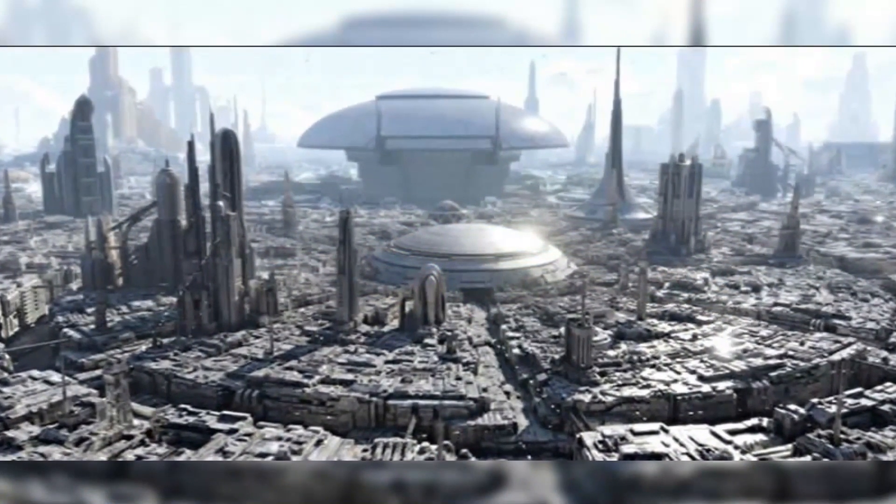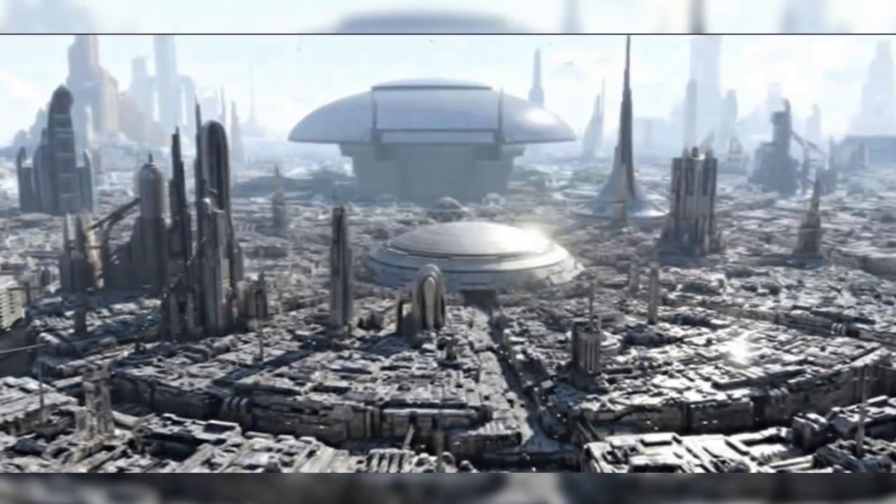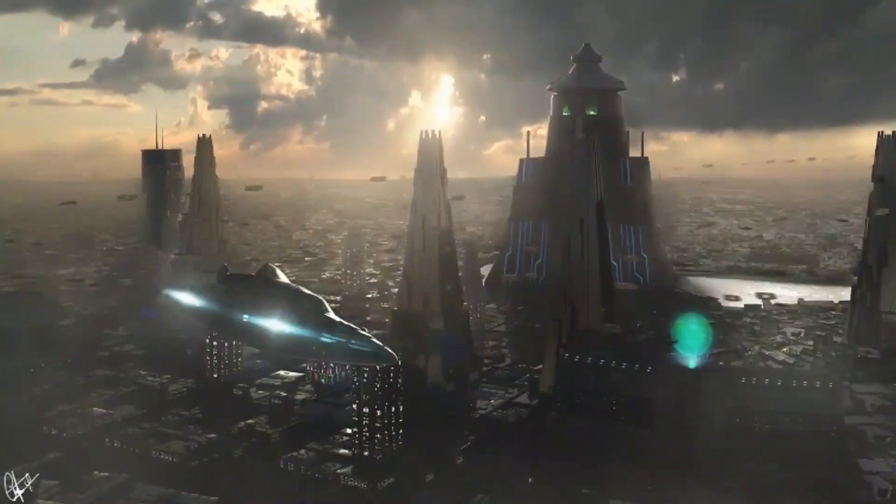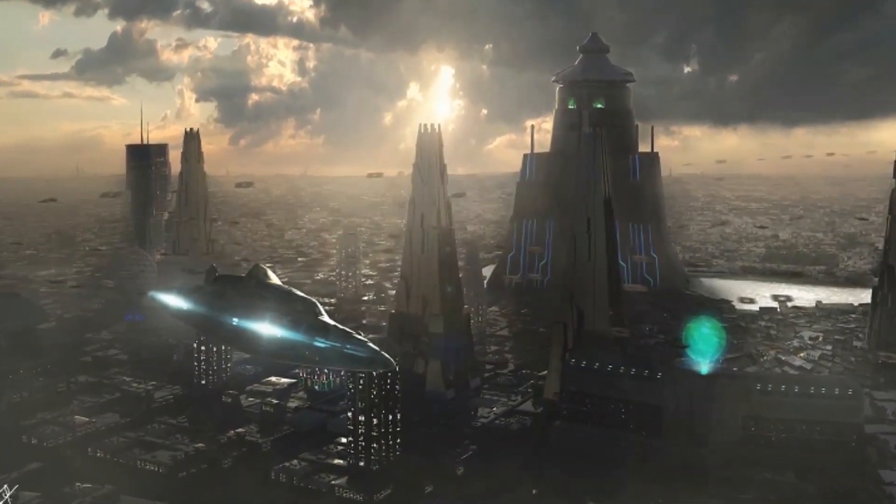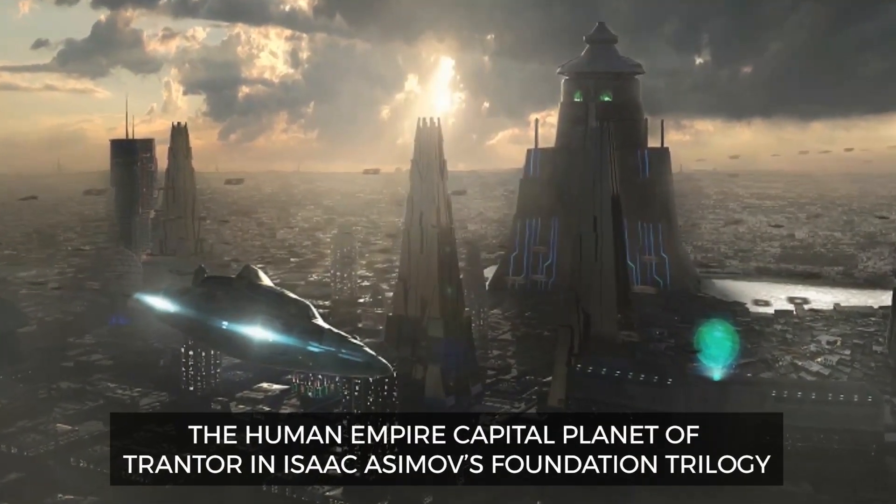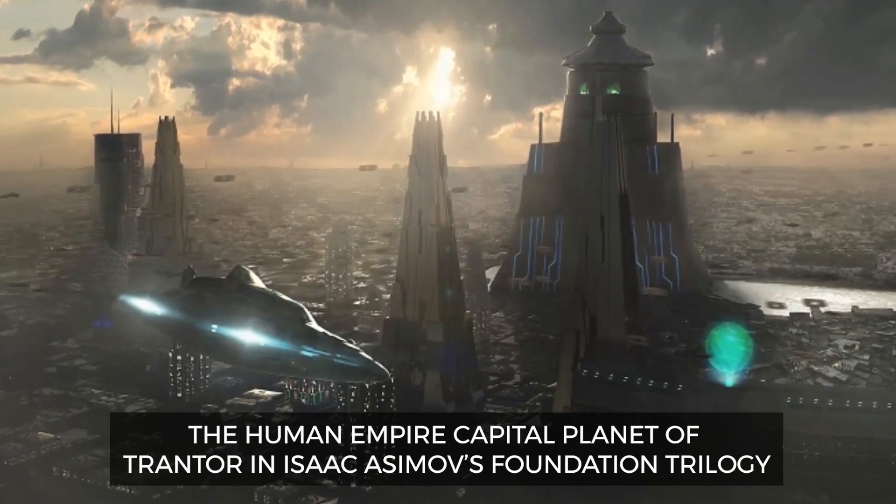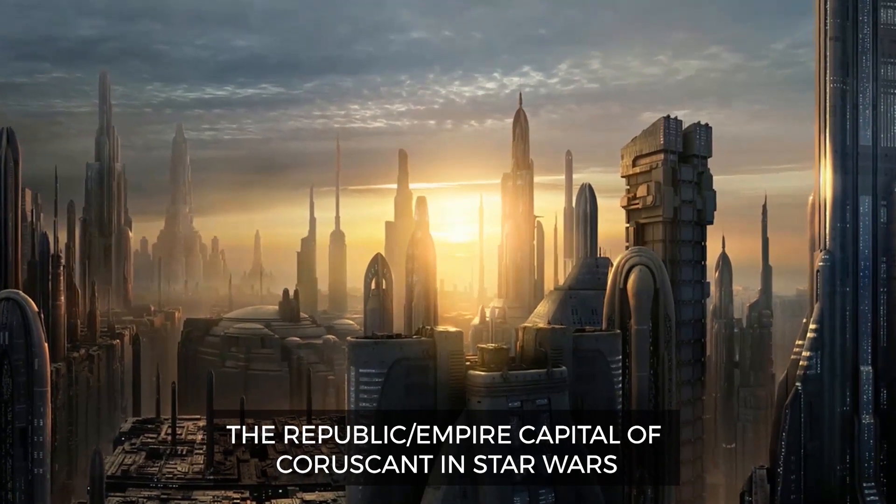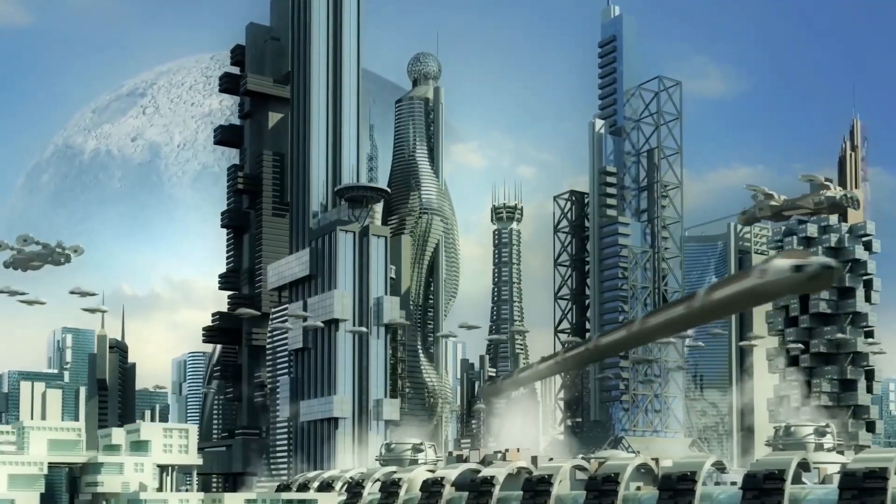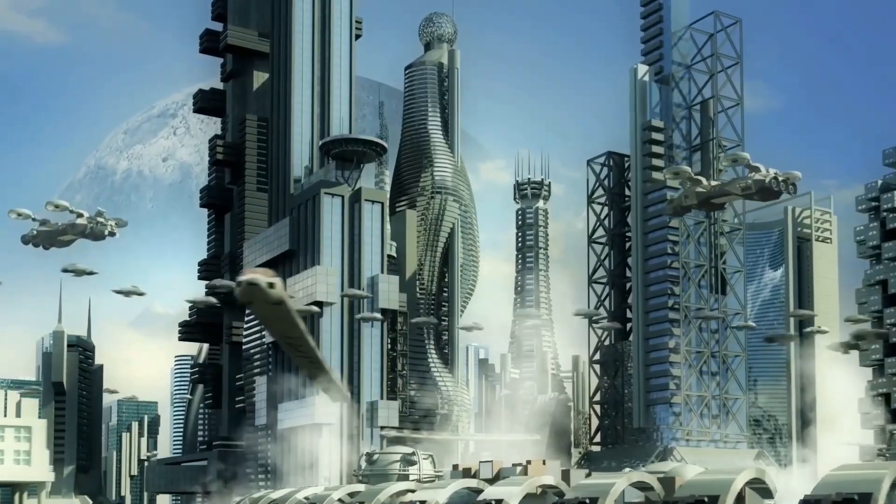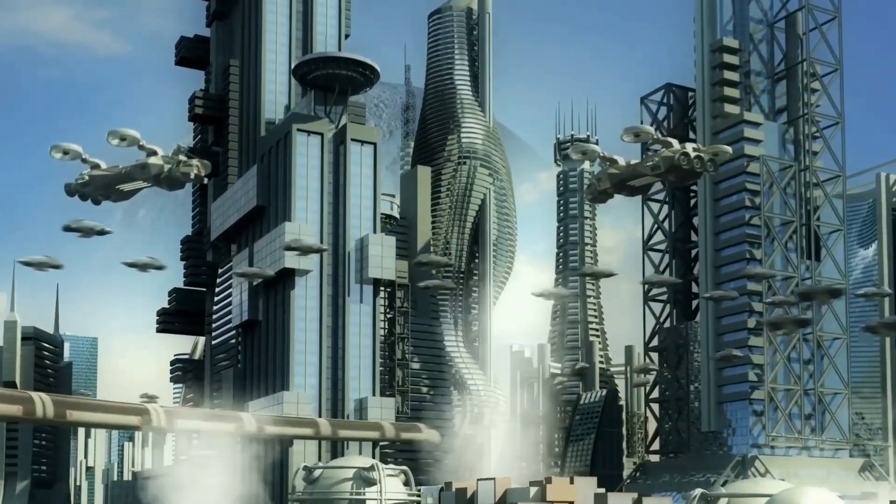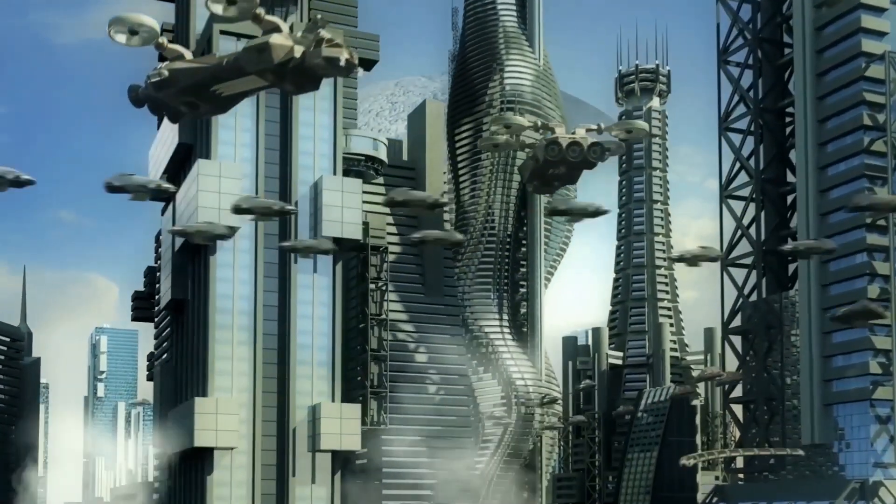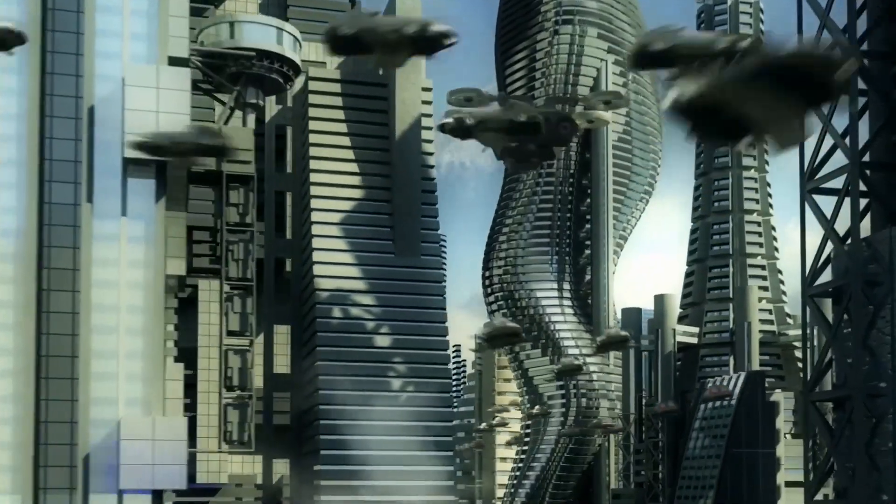An ecumenopolis. An ecumenopolis is a city planet, a world where the entire surface is covered in one giant city. Several examples exist in science fiction, such as the human Empire Capital Planet of Trantor in Isaac Asimov's Foundation Trilogy, and the Republic and Empire Capital of Coruscant in Star Wars. But more than a geeky sci-fi concept, it's conceivable that an advanced civilization could completely encase their world in an unending urban landscape. How visible would such a world be?